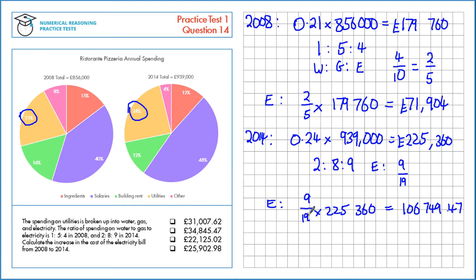Finally, we just need to find the increase in cost, that's the difference between these two here, so £106,749.47 minus £71,904, which is £34,845.47. That's the answer.